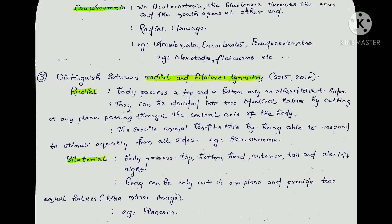In bilateral symmetry, the body has a distinct top, bottom, head, and defined anterior and posterior positions.